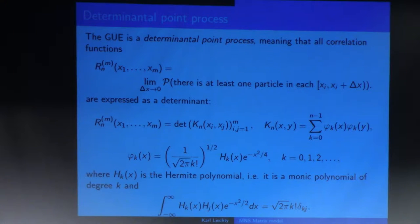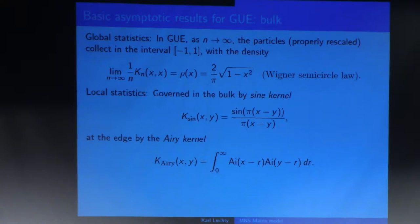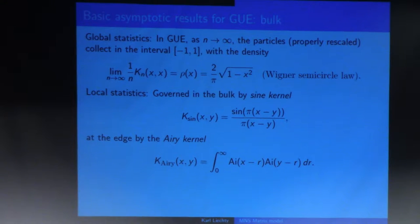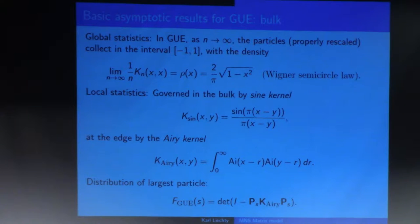There's the definition of the Hermite polynomials — these are orthogonal polynomials with respect to the Gaussian weight. The one-point function is the global density of eigenvalues. It has a limit as n goes to infinity given by the semicircle law. Locally, if we take local scaling limits in the bulk, this Christoffel-Darboux kernel converges to the sine kernel in the bulk; or if we take a slightly different scaling at the edge, it converges to the Airy kernel, which involves the Airy functions. Also, if we are interested in the largest eigenvalue and scale properly, we get the Tracy-Widom GUE distribution, which is a Fredholm determinant involving the integral operator given by this kernel.